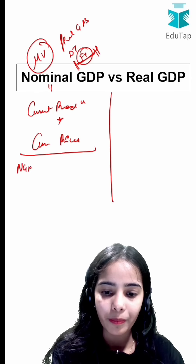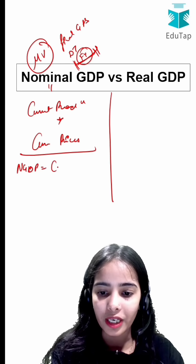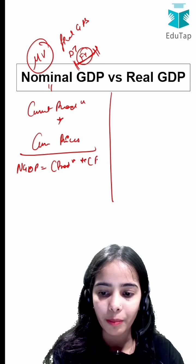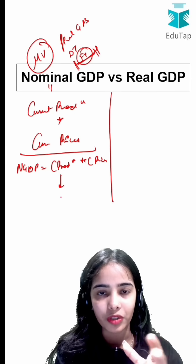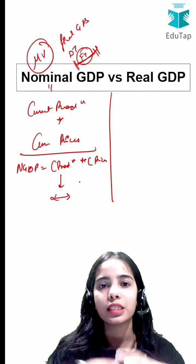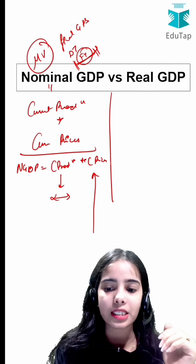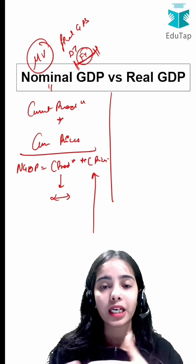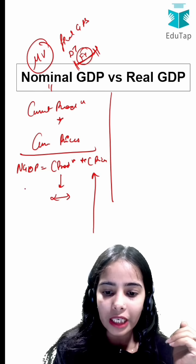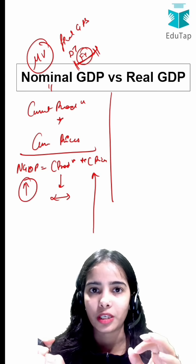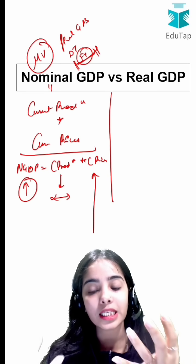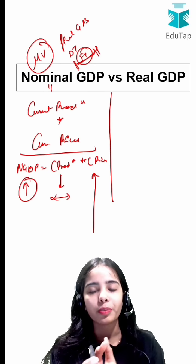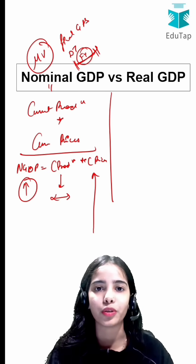So let's say the current production is decreasing as compared to the previous year, or the current production is constant, but the current prices are rapidly increasing by a greater proportion — it will still lead to an increase in the nominal GDP. So you can understand that nominal GDP can increase even when production is decreasing or constant.